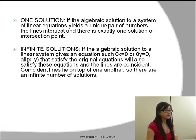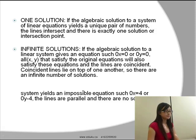If the algebraic solution to a linear system gives an equation such as 0x=0 or 0y=0, all x,y that satisfy the original equation will also satisfy these equations and the lines are coincident. Coincident lines lie on top of each other, so there are an infinite number of solutions.